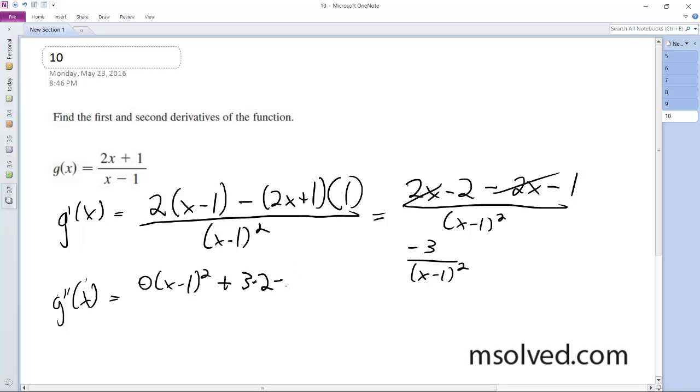So what we get is 6 times x minus 1 over x minus 1 to the 4th. Cancel that out, so this becomes 6 times x minus 1 raised to the negative 3rd. That's it.